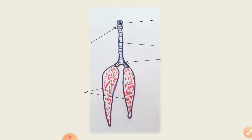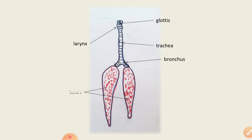Here is a diagram of the respiratory tract of reptiles. The glottis leads into the larynx, which leads into the trachea. The trachea bifurcates into two branches called bronchi, and each bronchus leads into the lungs.